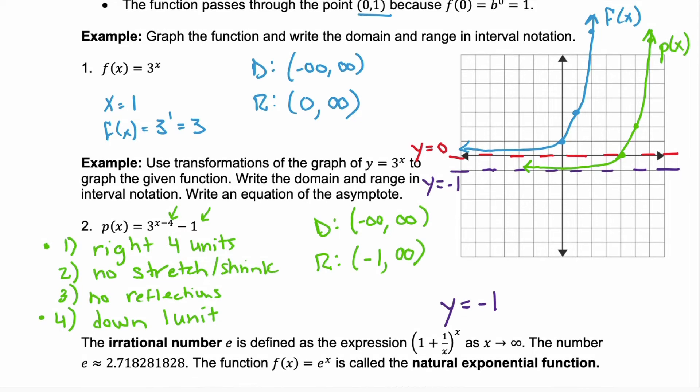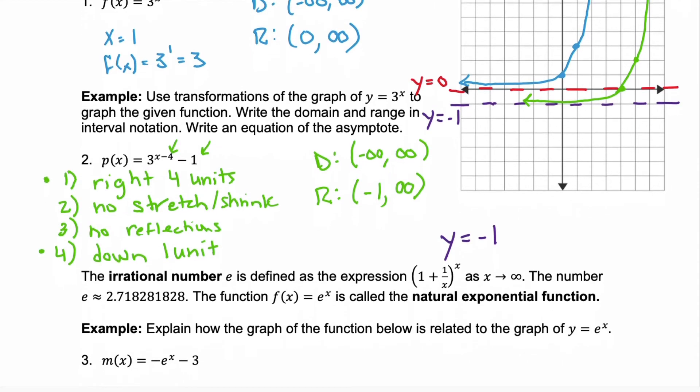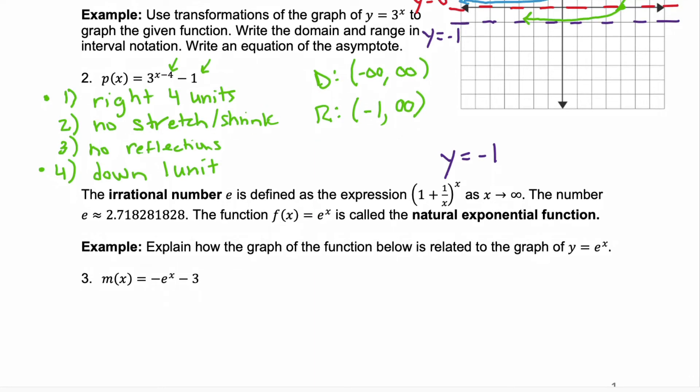Now we're going to talk about another type of exponential function, and that involves the irrational number e. e is defined as this expression, (1 + 1/x)^x, as x approaches infinity. So as x gets really large, we end up with this number e, and e is approximately equal to 2.718, and so on. We write this as a function, f(x) = e^x, and that's how we get the natural exponential function.